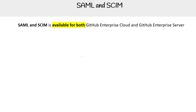Let's quickly talk about SAML and SCIM. These are both available for GitHub Enterprise Cloud and GitHub Enterprise Server. Just remember that these are features specifically for enterprise, and just have a general understanding of the difference between the two.